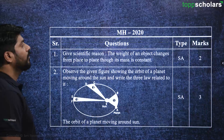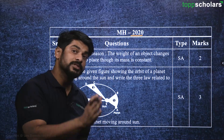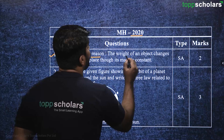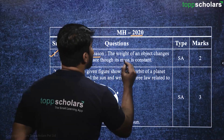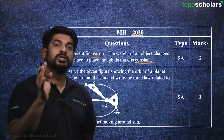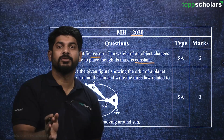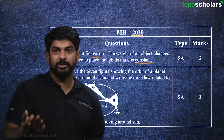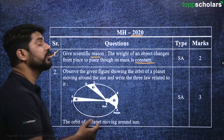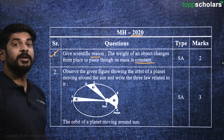Moving on, this is from the year 2020. The question is: give a scientific reason — the weight of an object changes from place to place, though its mass is constant. We need to explain why the value of weight changes from place to place. If you check the weight on the Moon or on Mars, you will find the value is different, even though the mass is constant. This will be discussed later.